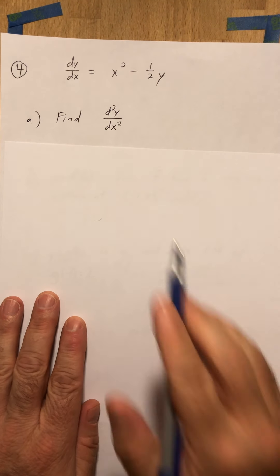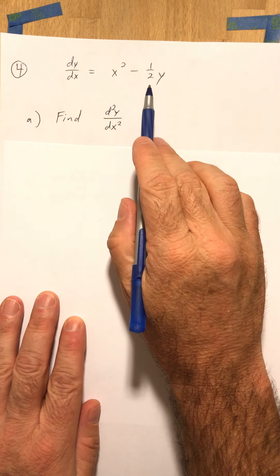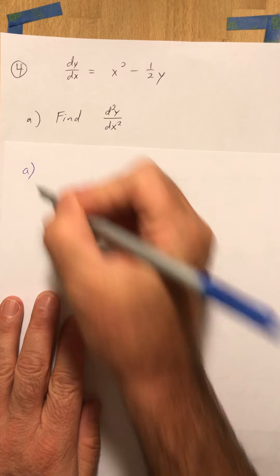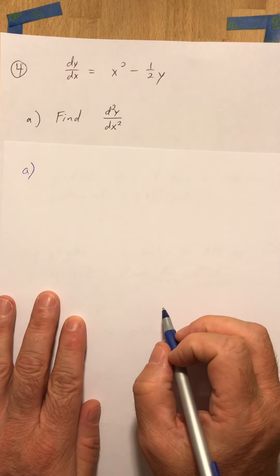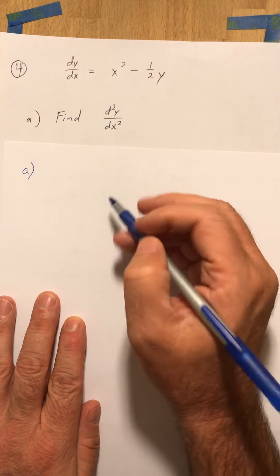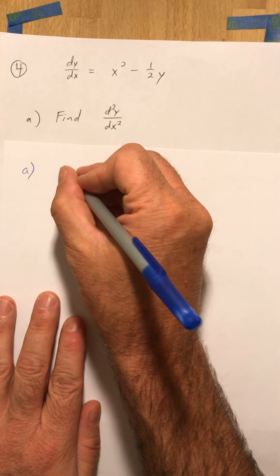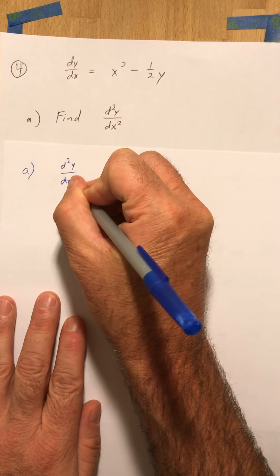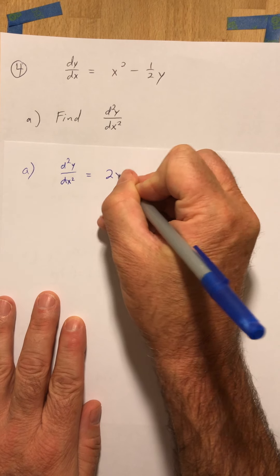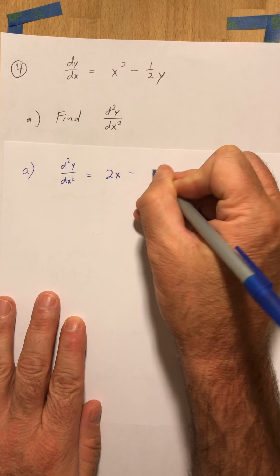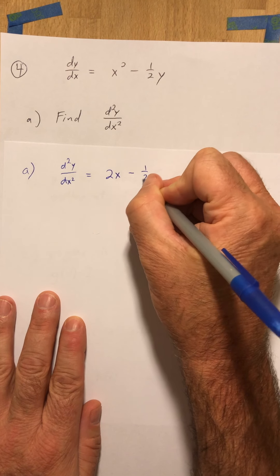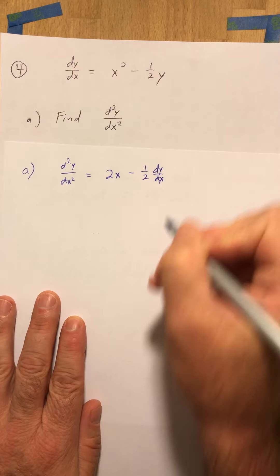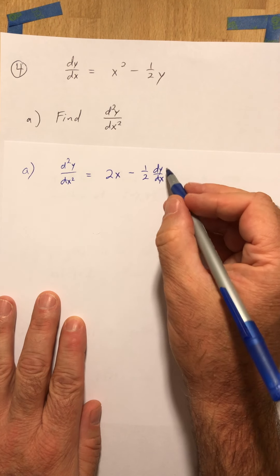Number four gives us a differential equation to start off with. The first question is what is the second derivative if the first derivative is this. The second derivative requires you to take the derivative of the derivative, and that's going to look like 2x minus 1 half dy/dx.